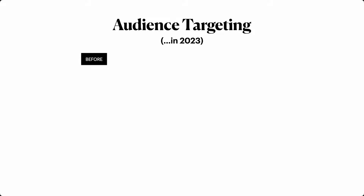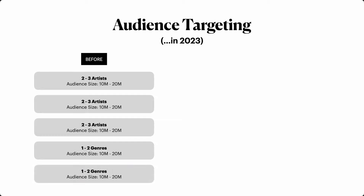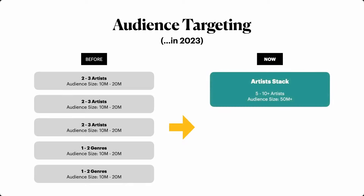In the past, what you'd usually set up is ad sets with maybe two or three artists in each, with an audience size of maybe 10 to 20 million, and you'd have two or three of these different artist ad sets fighting against each other. The idea was you could see which artists are working better, cut the ones that aren't working, and add new tests. You'd do the same thing with genres — maybe one or two genres per ad set — so your campaign might have a bunch of different artist ad sets against a bunch of different genre ad sets.